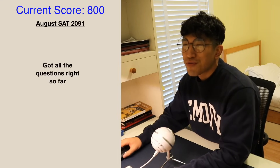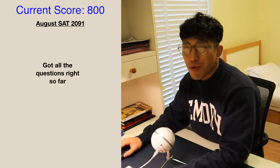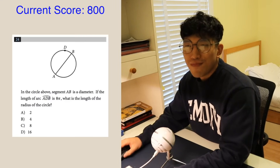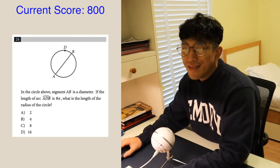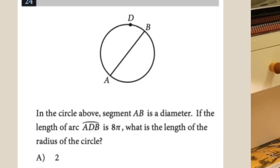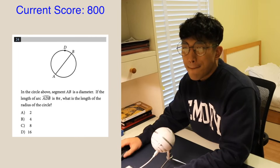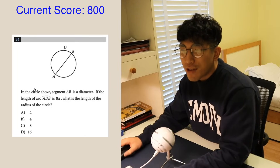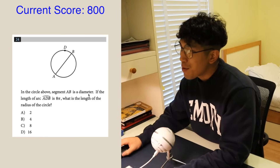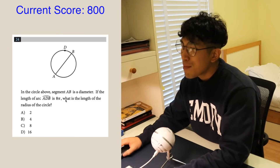Got all the questions right so far. Three more questions to go. Hmm, minus circle above, segment A, B is diameter. Circle is not my best part. Let me give it a shot. 12 seconds later.